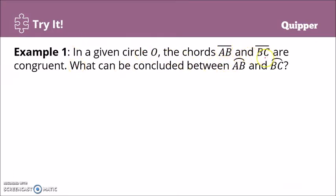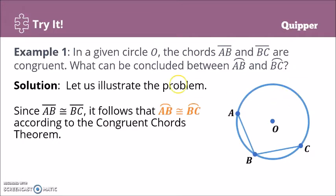Example 1: In a given circle O, chords AB and BC are congruent. What can be concluded between arcs AB and BC? Since the two chords are congruent, based on the Congruent Chords Theorem, their intercepted arcs are congruent as well. Therefore, arc AB is congruent to arc BC.